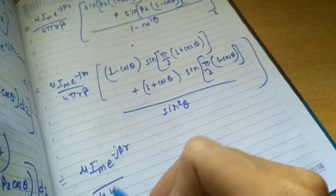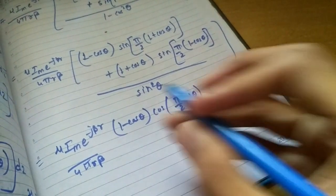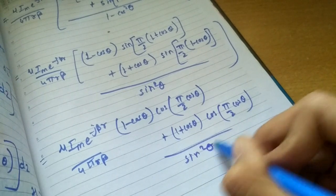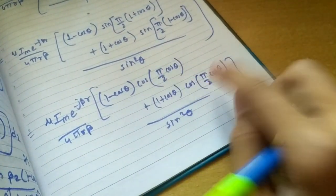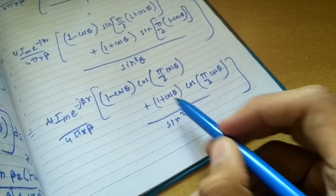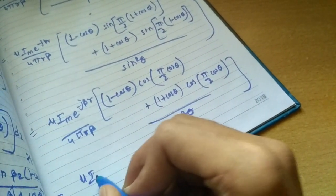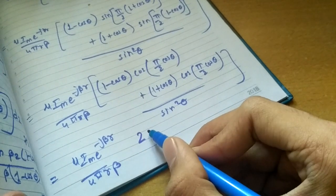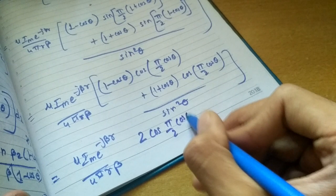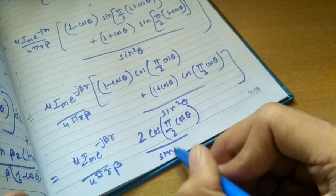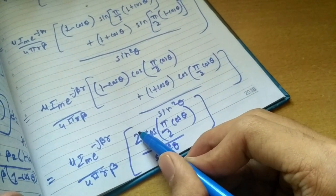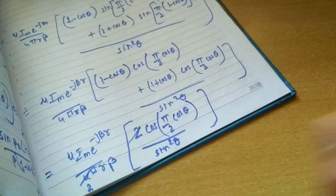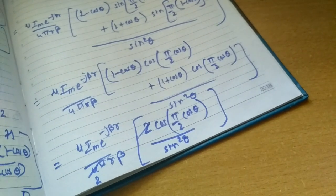Similarly, (1 plus cos theta) gives cos of (pi by 2 cos theta), and the denominator still has sin squared theta. We can take this common. We are left with (1 minus cos theta) cos theta plus (1 plus cos theta) cos theta. Cos theta will get cancelled out. This is the constant term throughout, and beta is here. We get 1 plus 1 equals 2; cos theta cancels. This common term is divided by sin squared theta. The 2 goes up here, giving us the final expression.